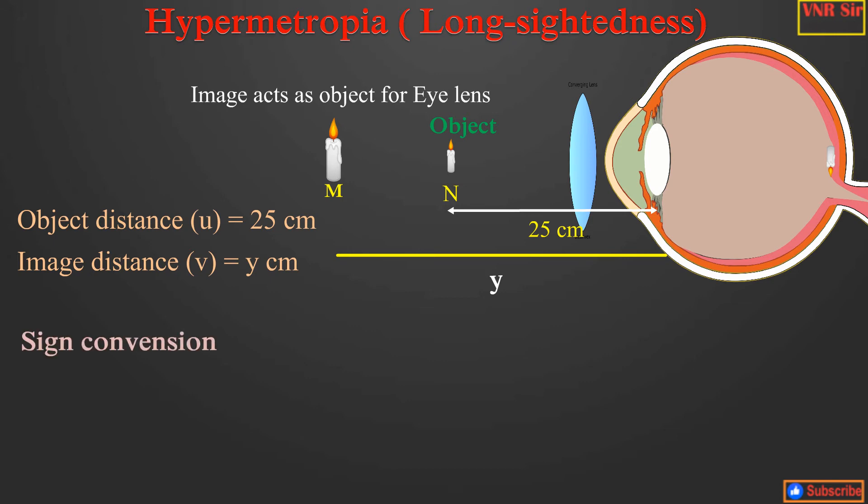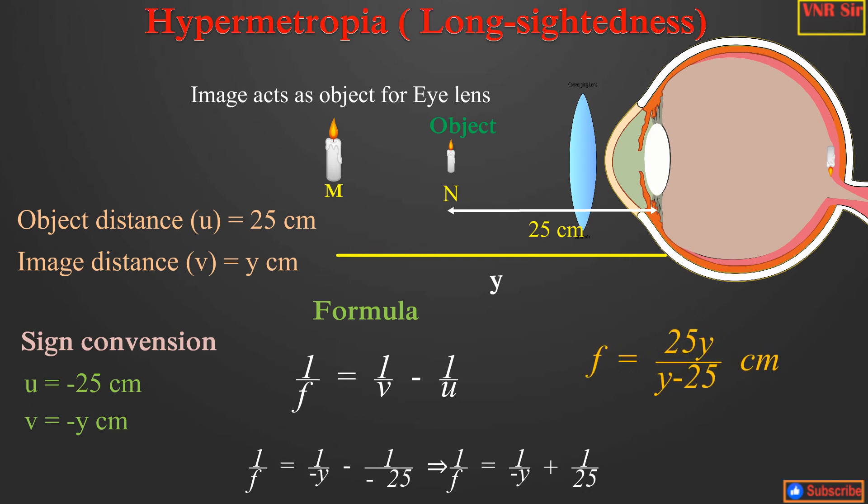By applying sign convention, u is equal to minus 25 cm and v is equal to minus y. From formula 1/f = 1/v - 1/u, if you substitute and simplify, you will be getting focal length of the convex lens is equal to 25y/(y-25). This is the focal length of the convex lens used to correct hypermetropic eye.